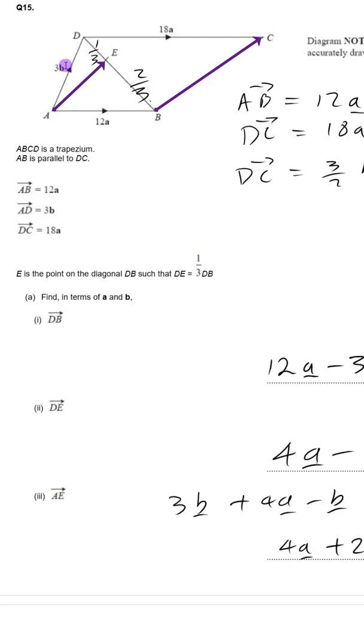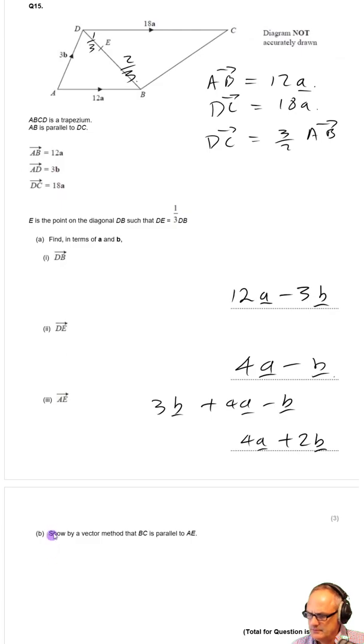BC is parallel to AE, so we want to find out what BC is. The easiest way to find BC is to go BA plus AD plus DC. We want to show by vector method BC is parallel to AE.